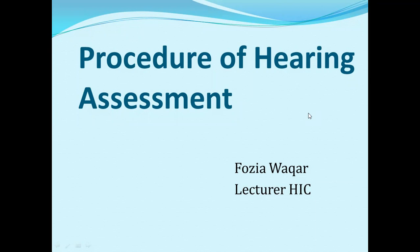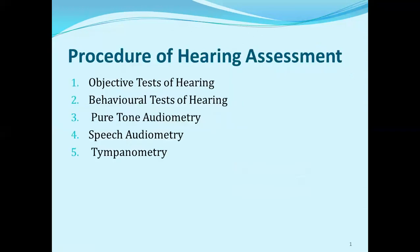When we get to know that our students have hearing loss, we have to decide on the student's rehabilitation. The first step is to take a hearing assessment. We have 5 procedures for hearing assessment: the first is objective type test, the second is behavioral test of hearing, the third is pure tone audiometry, the fourth is speech audiometry, and the fifth is tympanometry.